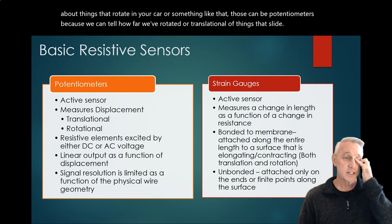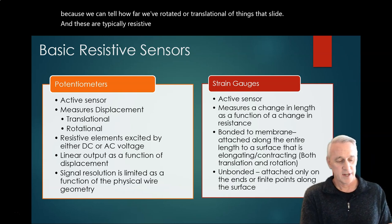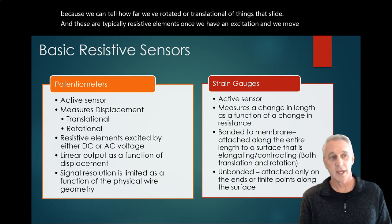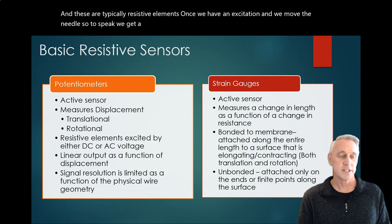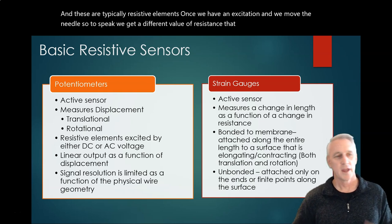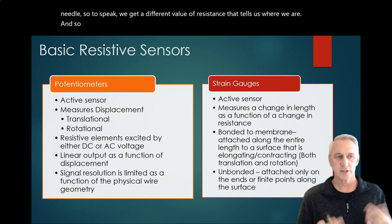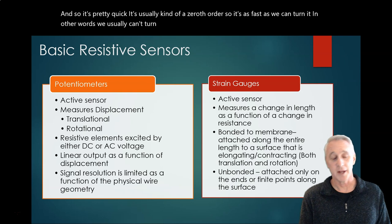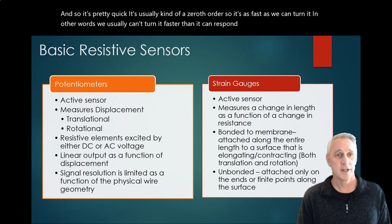These are typically resistive elements. Once we have an excitation and we move the needle, so to speak, we get a different value of resistance that tells us where we are. And so it's pretty quick, usually kind of a zeroth order. So it's as fast as we can turn it - we usually can't turn it faster than it can respond.